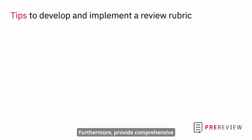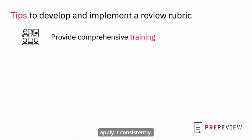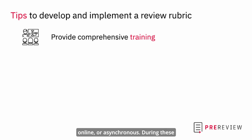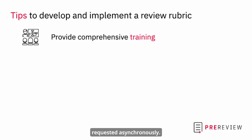Furthermore, provide comprehensive training: organize training sessions for reviewers to ensure they understand the intent behind each criterion and how to apply it consistently. These trainings can be in-person, live online, or asynchronous. During these training sessions, encourage open discussions about potential areas of ambiguity and misinterpretation. This feedback can also be requested asynchronously.